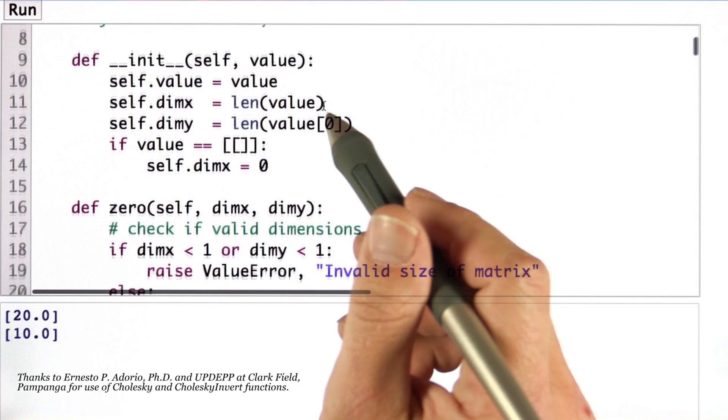I have a new challenging programming assignment for you that will take you a while, but I would like you to implement a multi-dimensional Kalman filter for the example I've just given you.